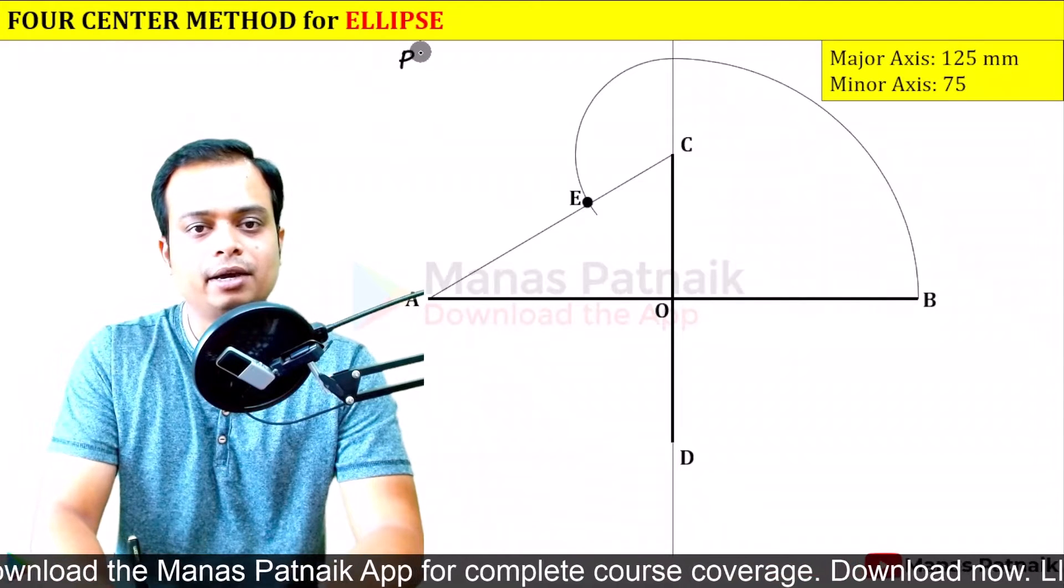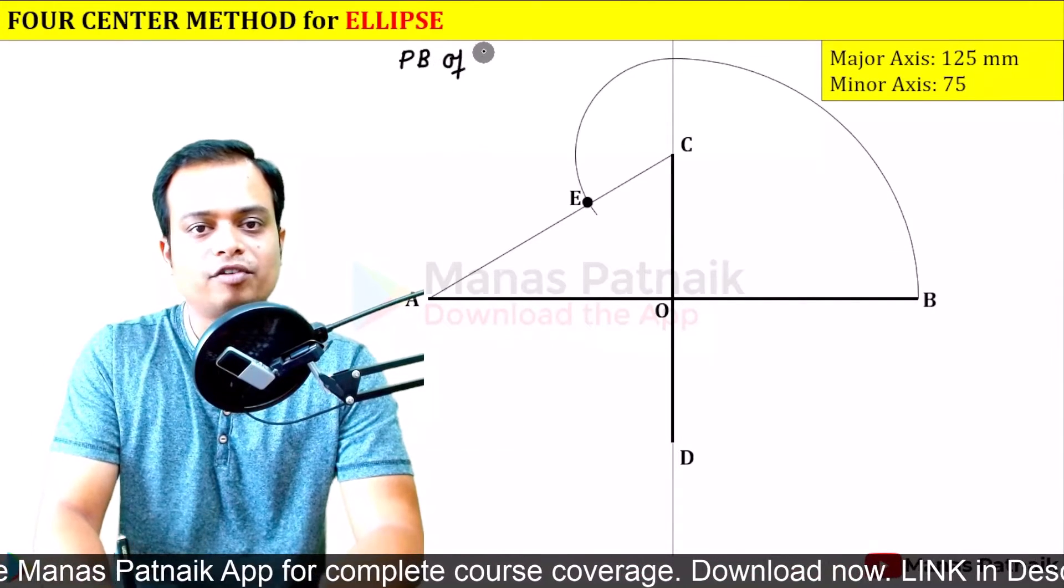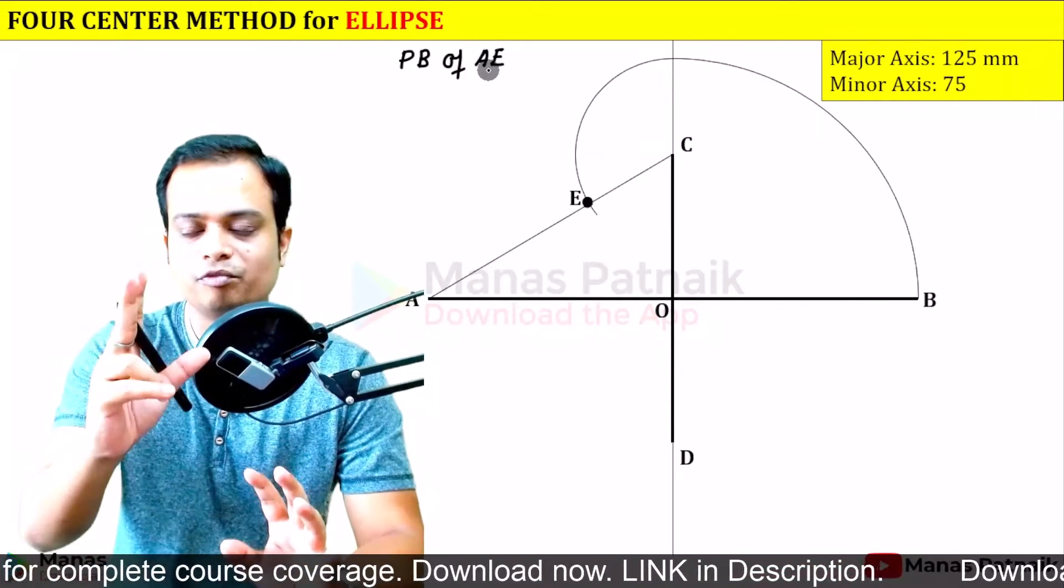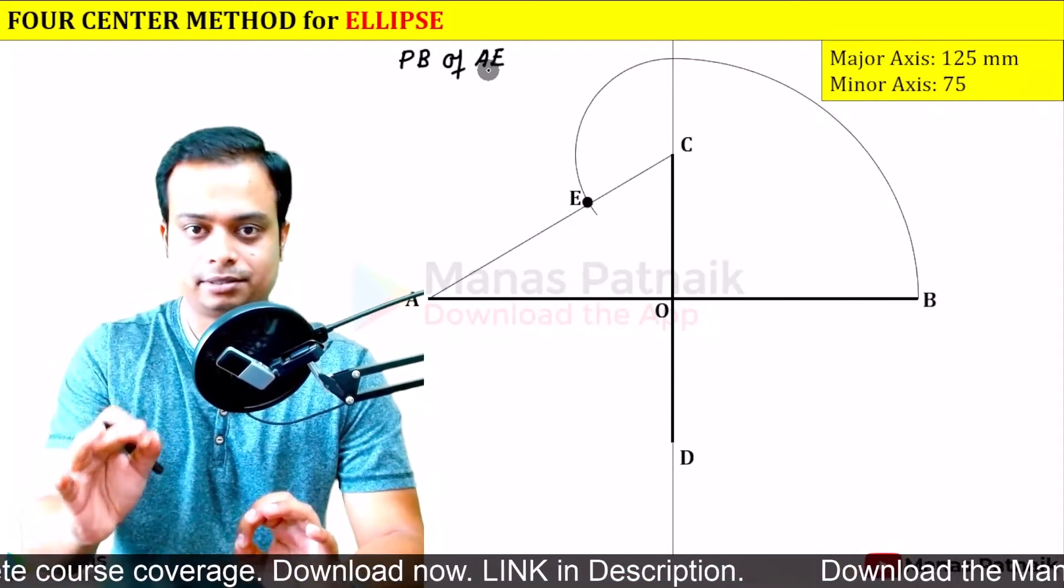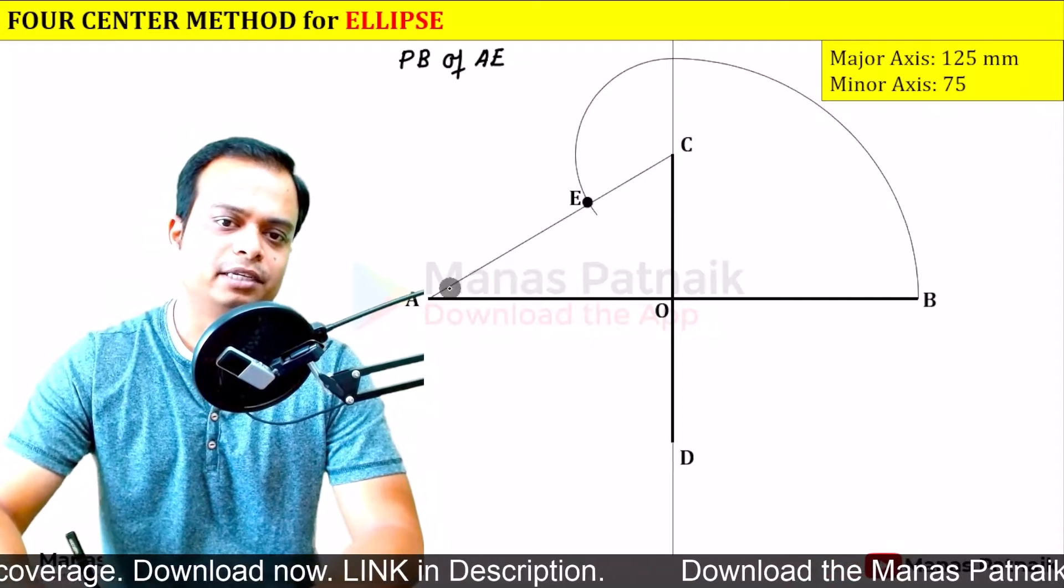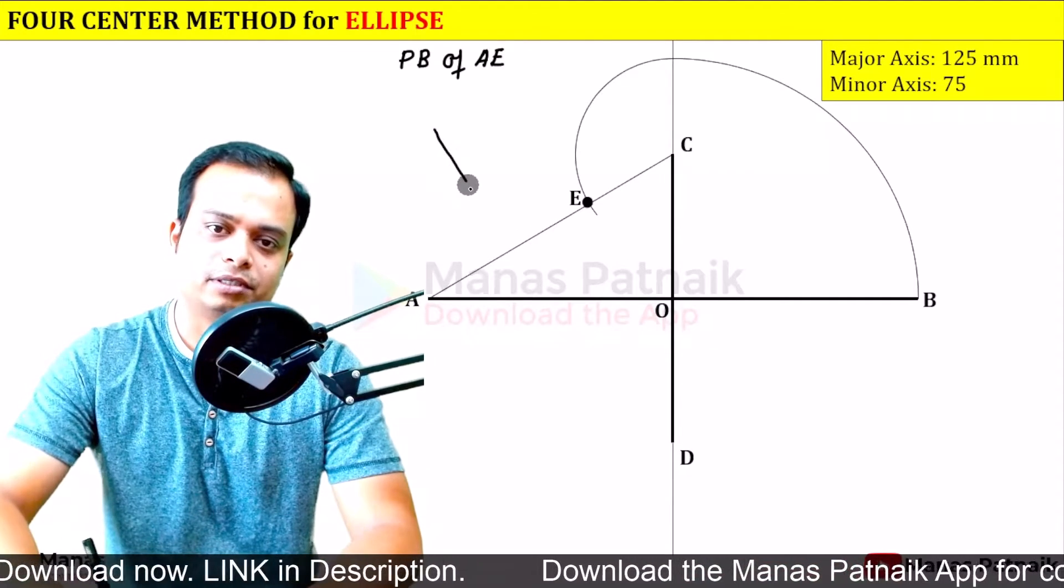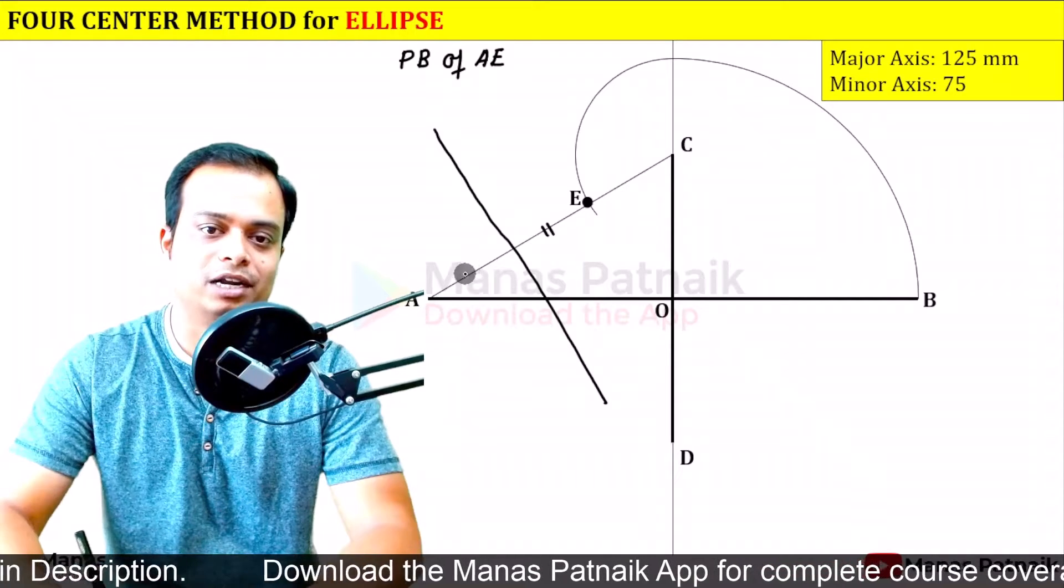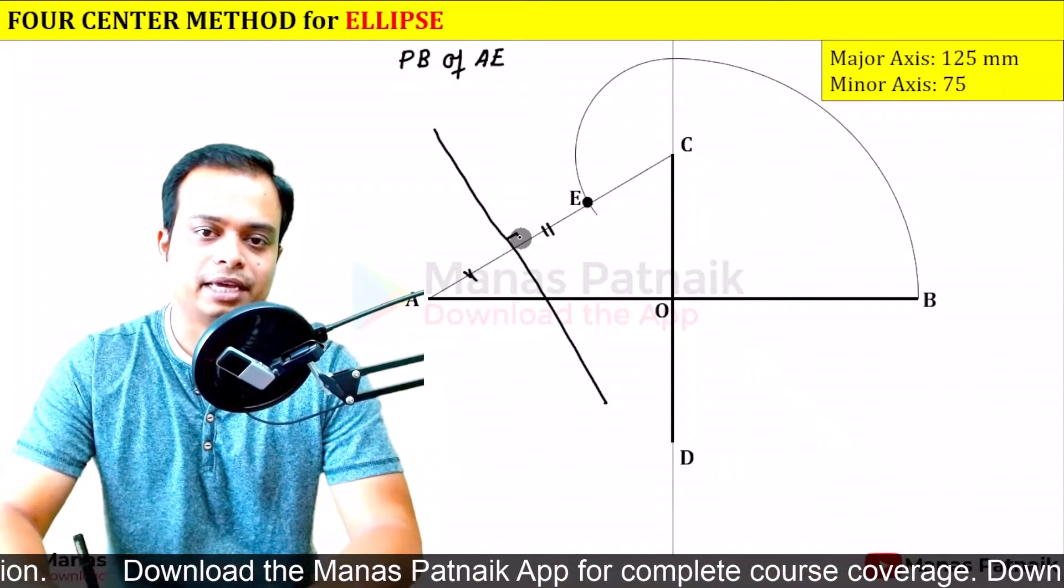Now what you need to do is find the perpendicular bisector of AE, and this is going to give us two very important centers. Perpendicular bisector means it is going to be simply a line like this which is going to divide AE into two equal divisions, and at the same time here the angle made would be 90 degrees.